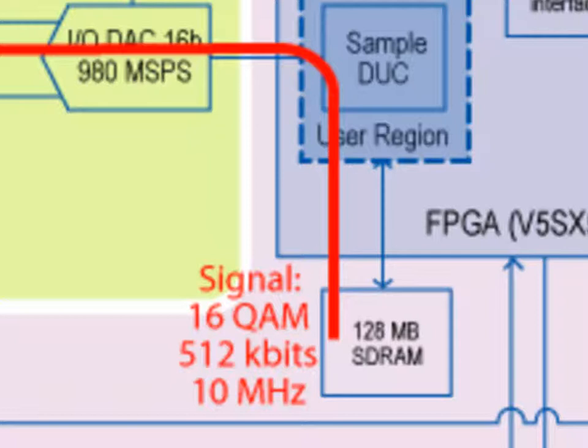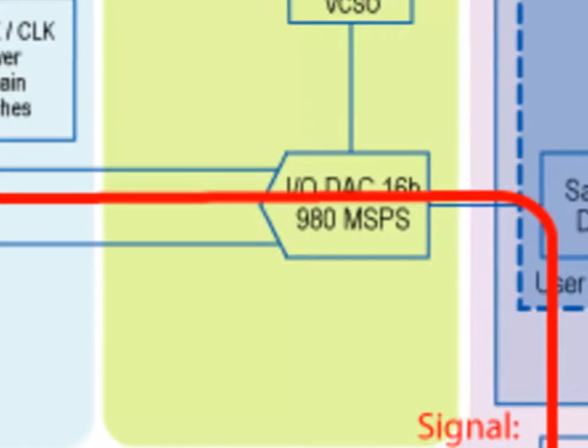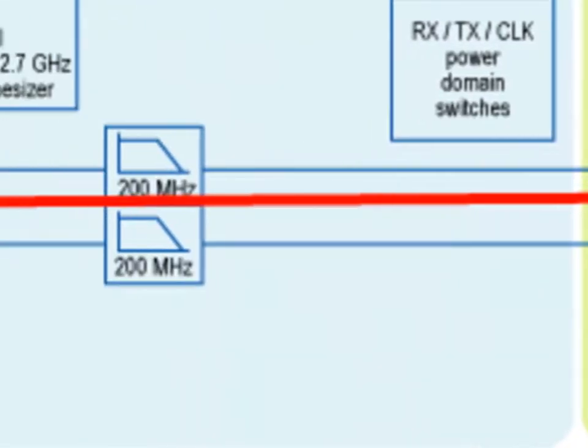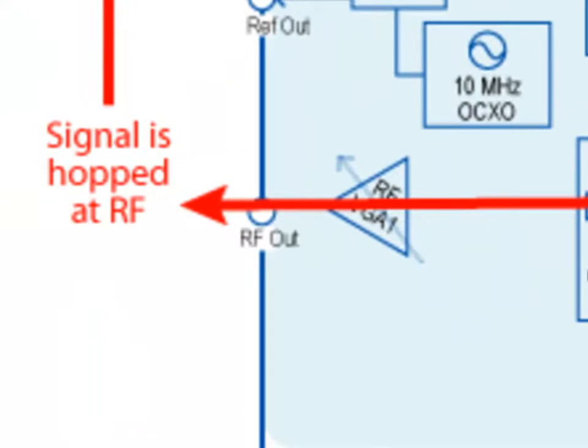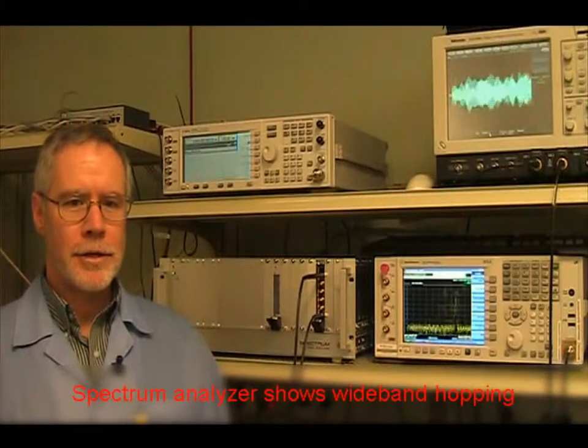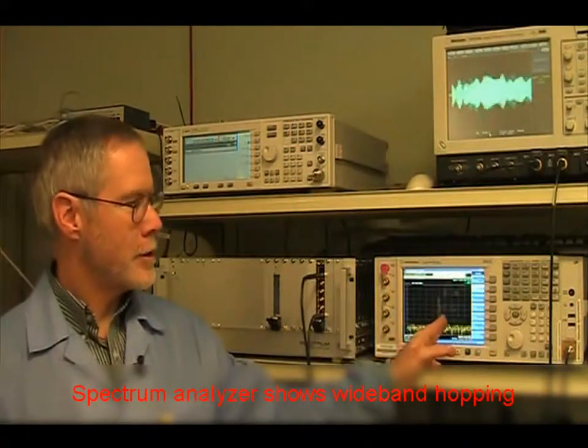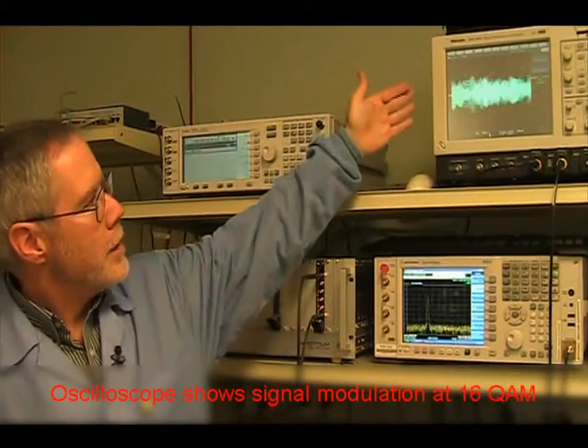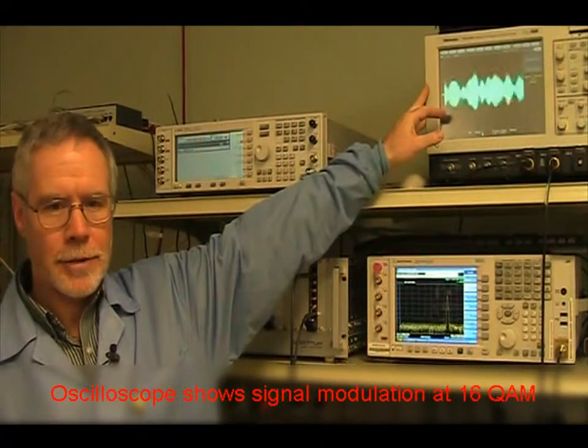We output the zero IF samples through the high-speed 16-bit dual DAC and send that to the RF4902's transmitter stage, where we hop the signal and output the RF. We then route the signal to the spectrum analyzer where you can see the wideband hopping signal scanning in sequence. We also send it to the high-speed scope where you can see the signal is modulated with the 16-QAM signal.